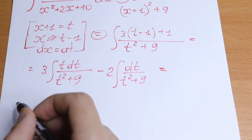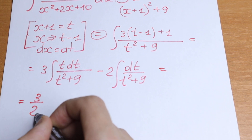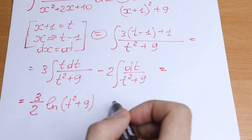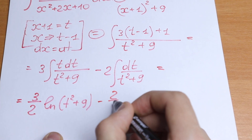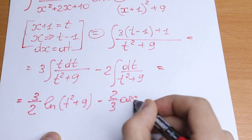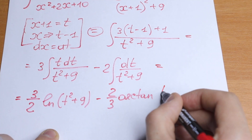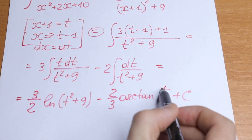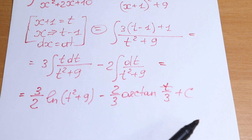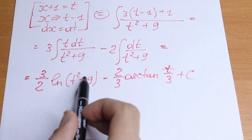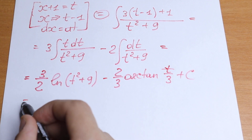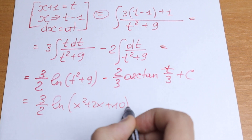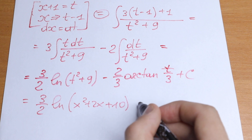So we can write the result as 3 over 2 times the natural log of (t squared plus 9) — this is our first element, the natural log case — and minus 2 thirds times arctangent of t over 3, plus C.